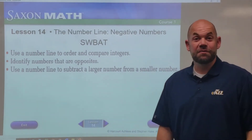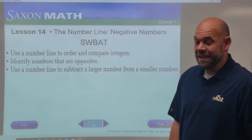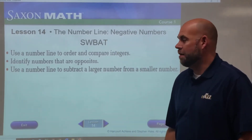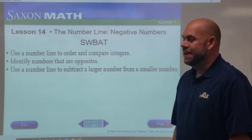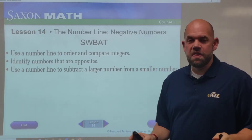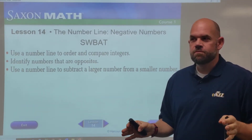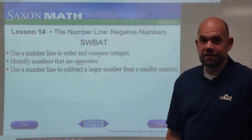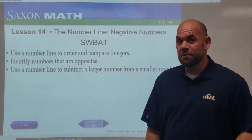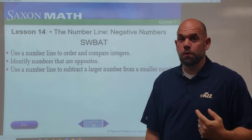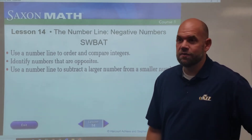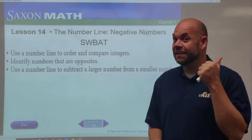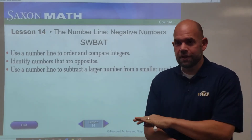Hey guys, welcome back to Level 6 Math. Today we are going to be looking at Saxon Math Lesson 14. This is a lesson that really gives a lot of students trouble. We're looking at the number line with negative numbers — we've talked about negative numbers a little bit before, but we haven't done problems with negative numbers, and this is a really tricky concept until it clicks.